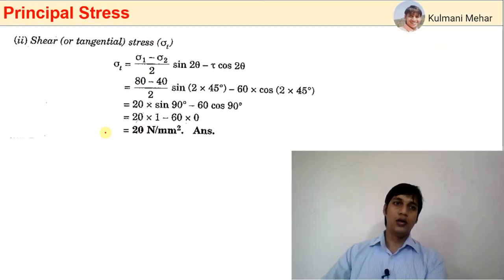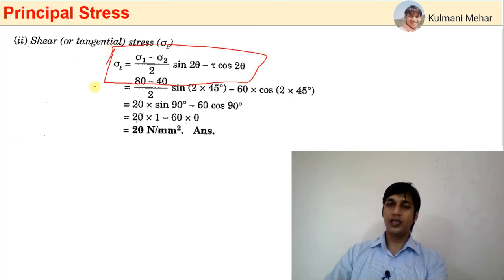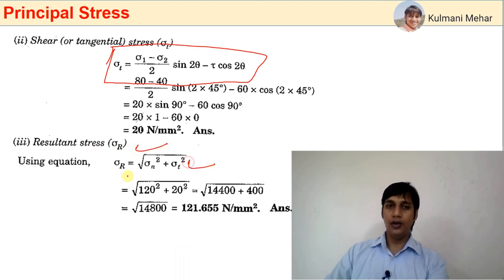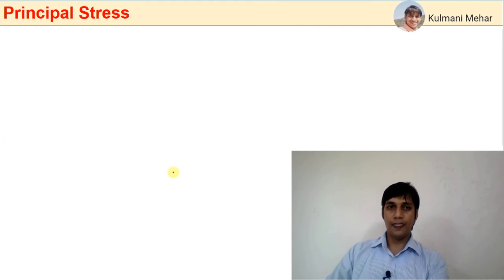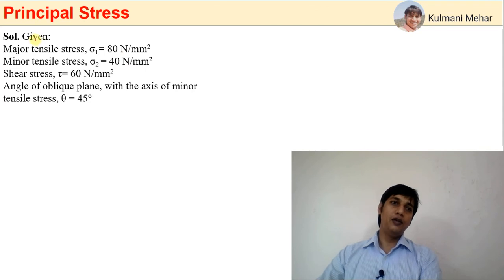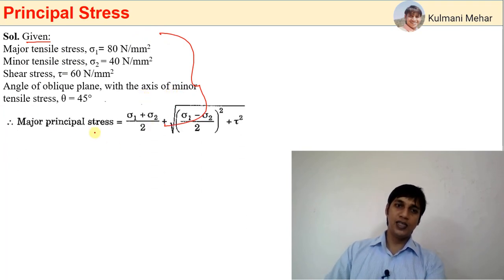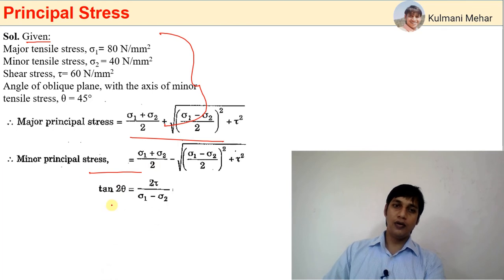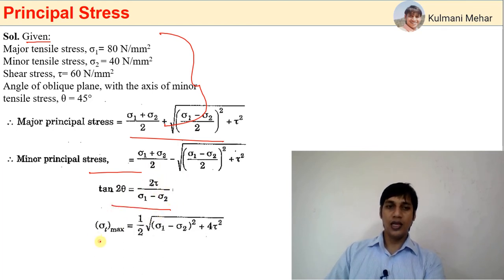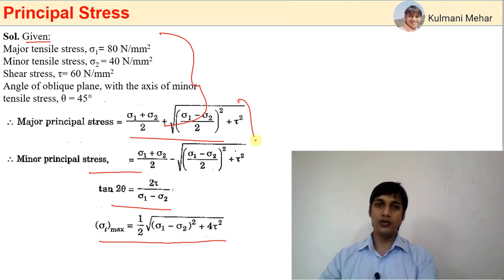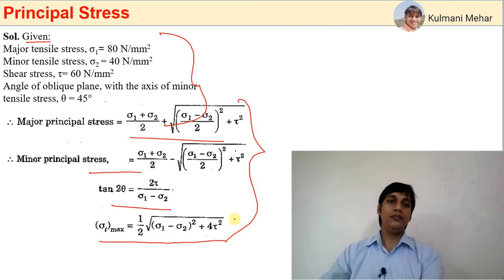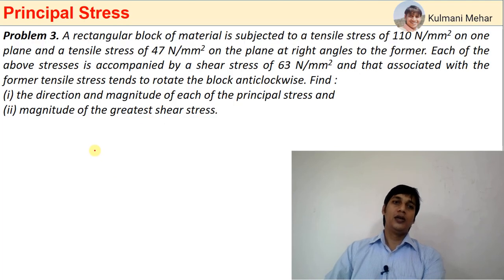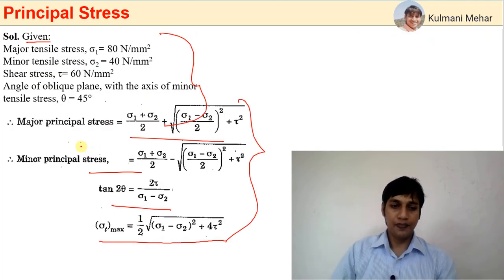There is no problem finding σN, σT, and σR using the standard formulas. We should also find principal stress for the same conditions, using: σp = (σ1+σ2)/2 ± √[((σ1−σ2)/2)² + τ²], and the angle of principal plane via tan(2θ), and τmax from the corresponding formula. We will solve this same problem using MATLAB.